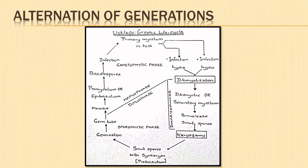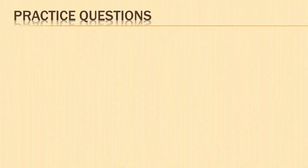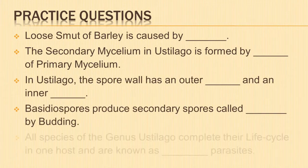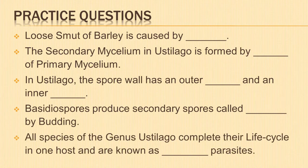So today we have learned in detail about genus Eustilago — its modes of reproduction, different methods of dikaryotization, and alternation of generations in its life cycle. I have some practice questions for you; please share your answers in the comments section below.